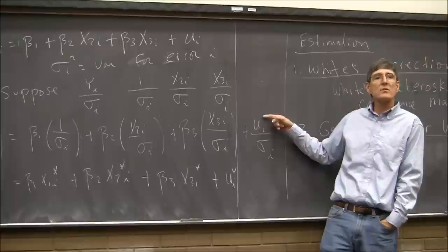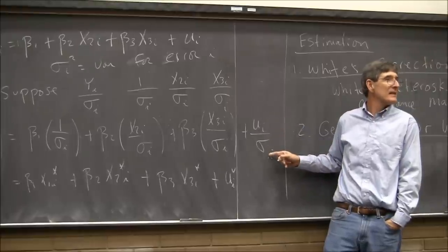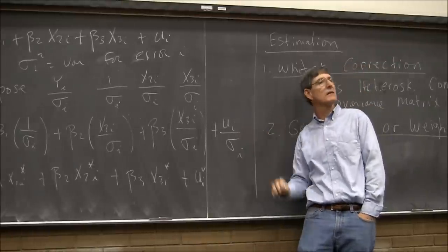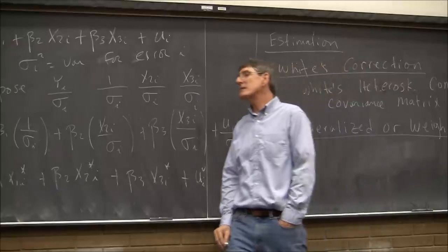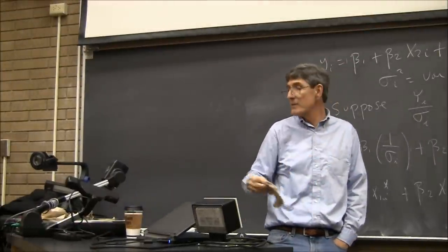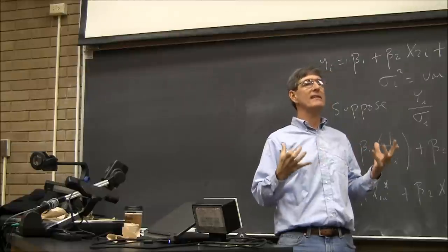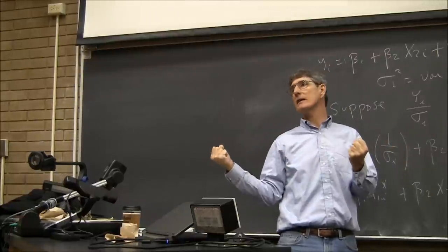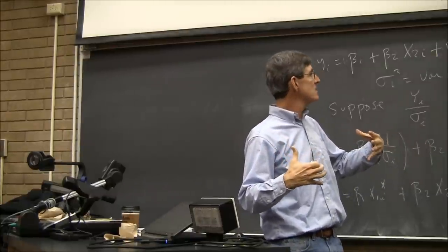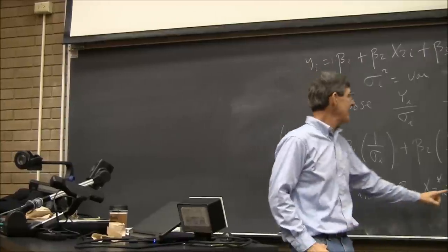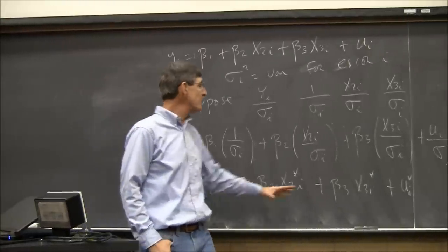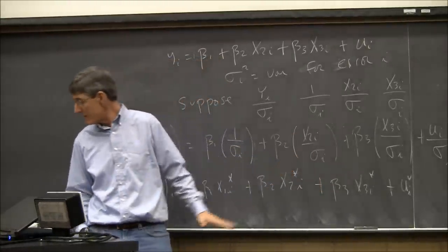If I square uᵢ* = uᵢ/σᵢ and take the expected value, I get σᵢ²/σᵢ² = 1. So we don't have heteroscedasticity in the transformed model. This is a trick we're going to use over and over again whenever we hit problems with these models — ask: how can I transform the data in a way that recovers the Gauss-Markov assumptions? Is there a way to transform the data so that the model still has the betas I want to estimate and gives a BLUE estimate?